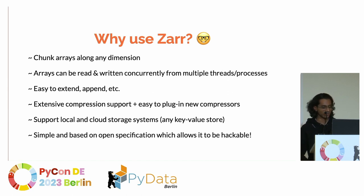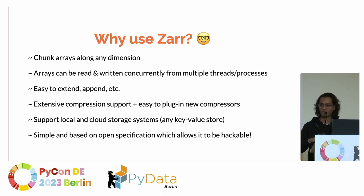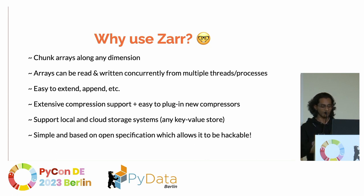Why should you use ZAR? You can chunk arrays along any dimension — not just the default. Arrays can be written concurrently from multiple threads and processes, which is helpful for large datasets in the cloud or locally. It's easy to extend, the API is mostly similar to NumPy, and the compression support is great. It's also a simple, open specification, which allows it to be hackable. You can go home and implement ZAR in your own programming language.